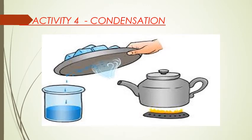Activity 4: Condensation. Condensation is a process of conversion of water vapor into water droplets. When a liquid is heated, it evaporates into vapor. When you cover or block the vapor, it gets condensed and turns into water droplets. Here also, you can notice that the change occurred in the state of substance.